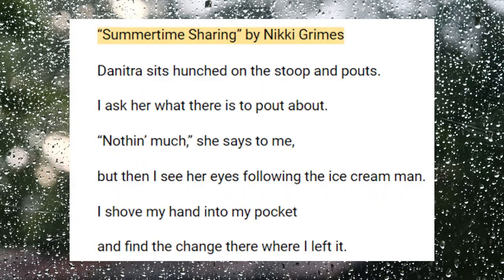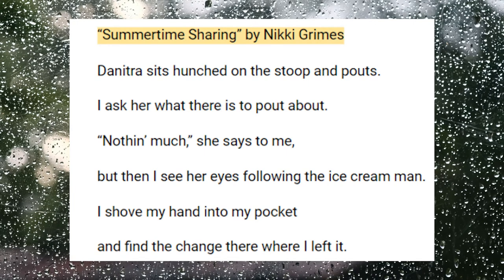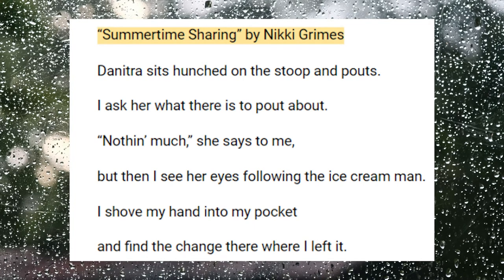Poem three is "Summertime Sharing," also by Nikki Grimes. Denitra sits hunched on the stoop and pouts. I ask her what there is to pout about. Nothing much, she says to me. But then I see her eyes following the ice cream man. I shove my hand into my pocket and find the change there where I left it. Be right back, I yell, running down the street.